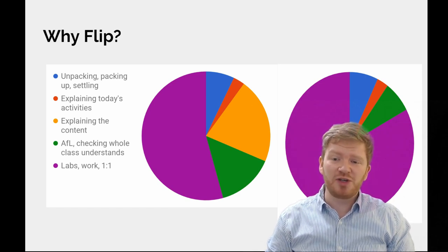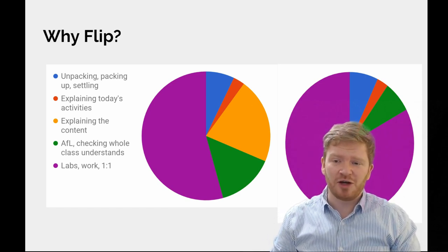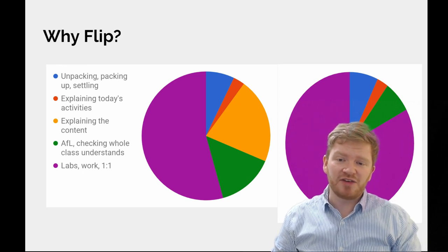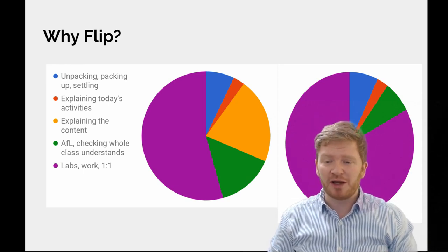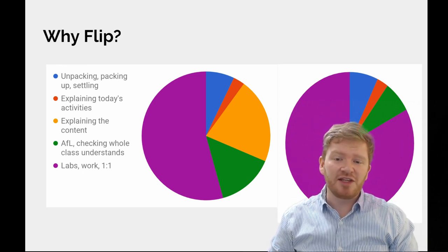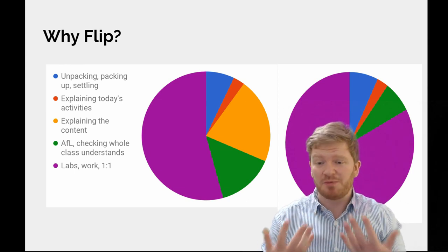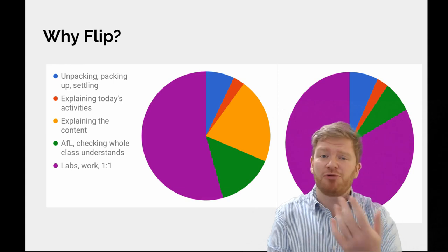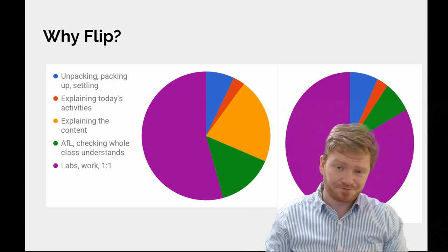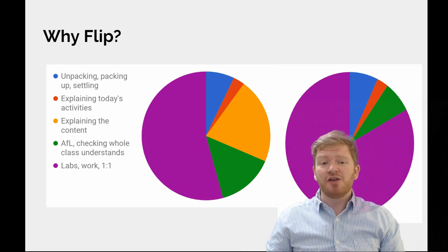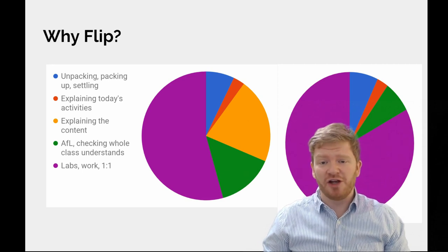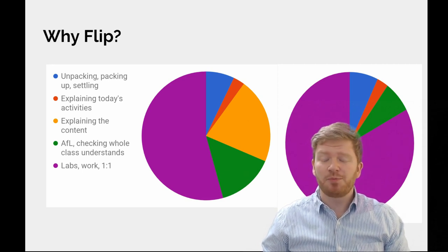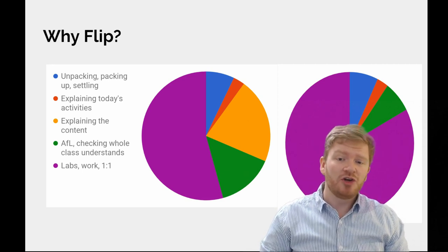The two key sections that I think are most important for learning is the yellowy-orange section, which is about explaining content, and the purple section, which, as we're mostly a science department, was all about labs, but also your one-to-one work, your practical work, anything like that.